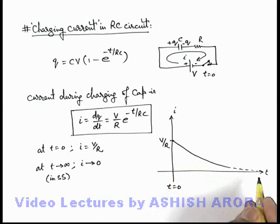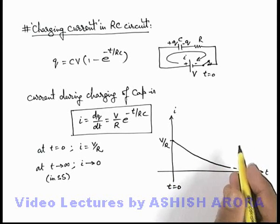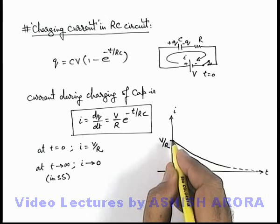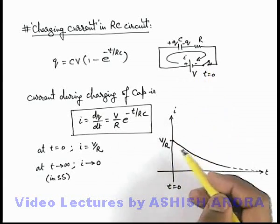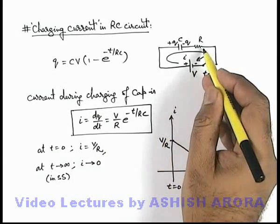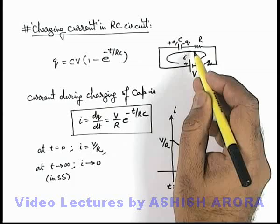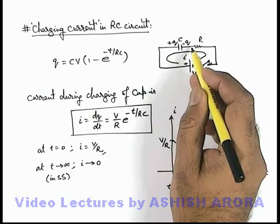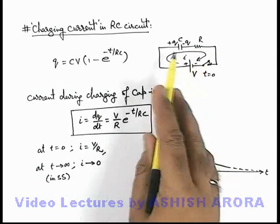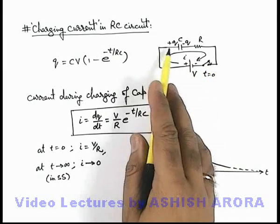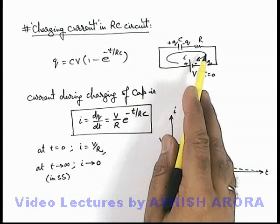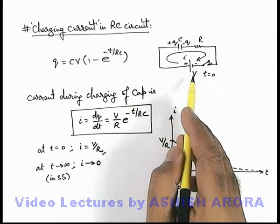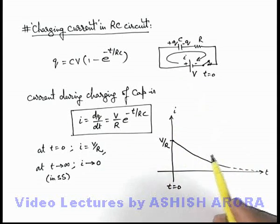As the current goes down, the charge on the capacitor increases to its steady state value. An important fact here: at t equal to zero, just after closing the switch, the current is V/R — as if the capacitor is behaving like a straight wire or a short circuit. Always remember: in an RC circuit when the switch is just closed, an uncharged capacitor behaves as a short circuit when current is being supplied by the battery. This concept will be discussed in detail later.